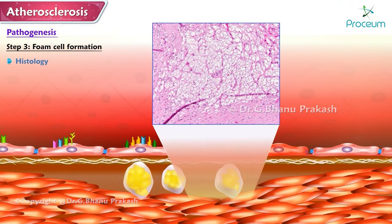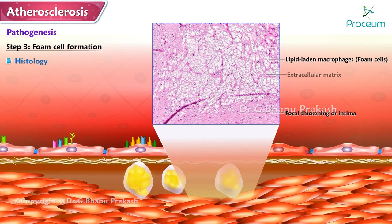Foam cells constitute the hallmark of the early atheroma. Histologically, it appears as focal thickening of the intima with an accumulation of lipid-laden macrophages (foam cells) and extracellular matrix.